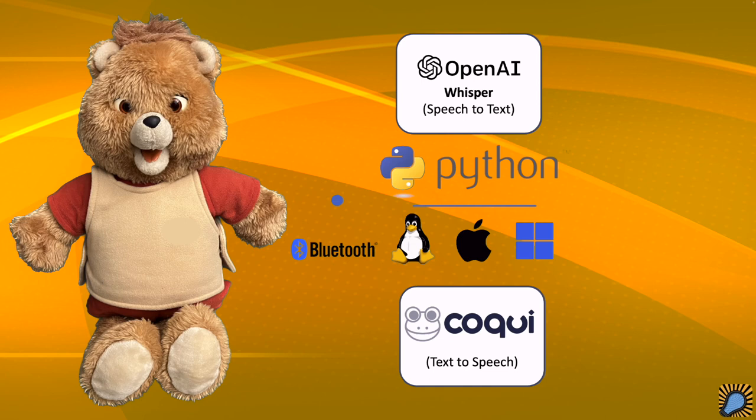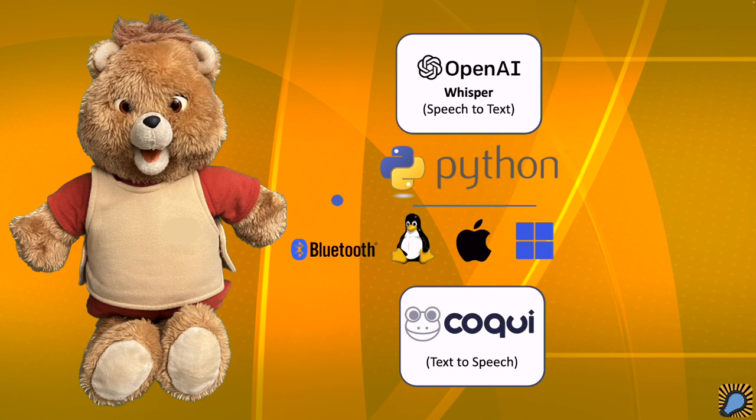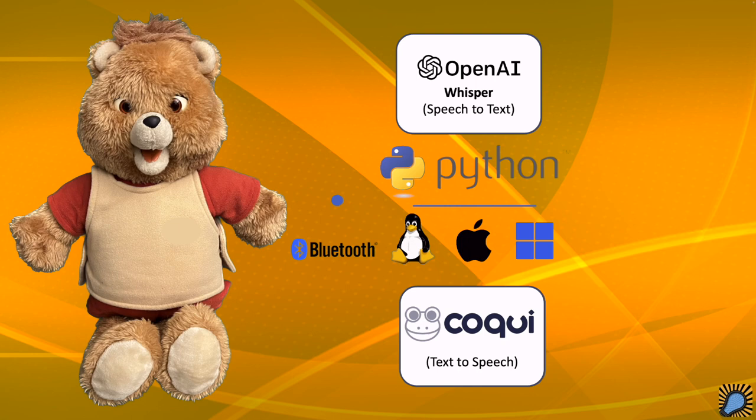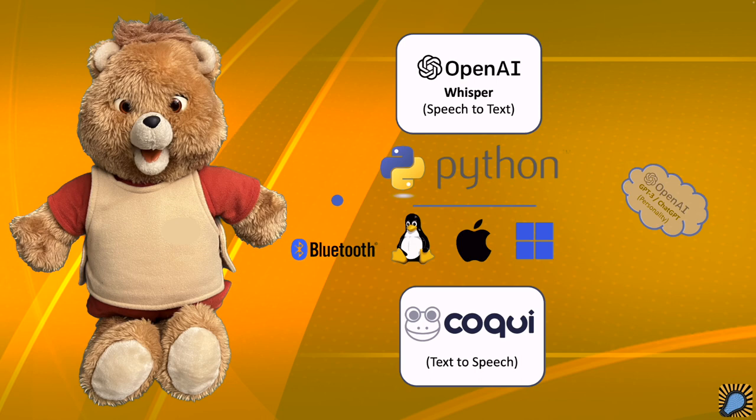Two key packages are OpenAI's Whisper, a speech-to-text AI model, and Coqui, a text-to-speech AI model. All speech processing occurs on a local computer, so a higher-end system is required for the best result. Using slower systems can result in awkwardly long pauses before Teddy responds, which breaks the illusion of interactivity. While the code does run on small single-board computers like the Raspberry Pi 4, it did not have the power to provide a satisfactory experience.